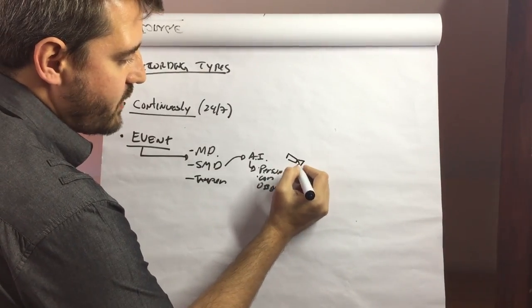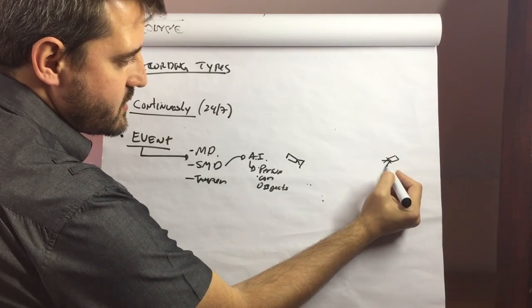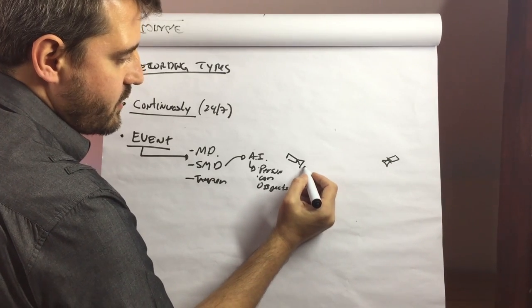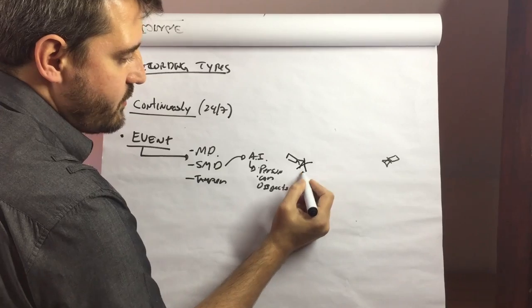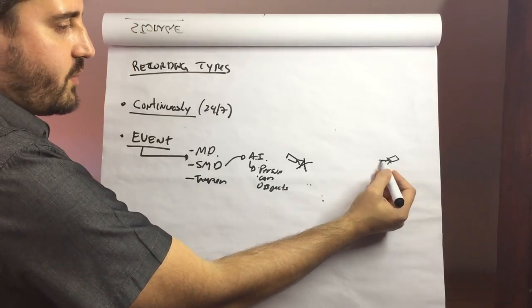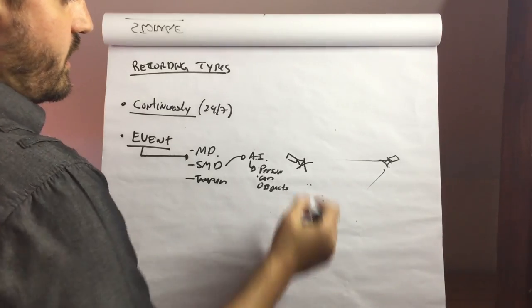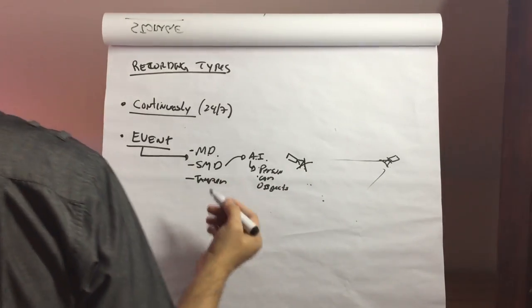But you can have other cameras that are pointing. So let's assume we have this camera here. And then we have this camera here that is not in the schedule to record this time. But if some burglar goes here and blocks the view of this camera, you can trigger this camera to start recording and capture who is doing this. So it's another type of event.